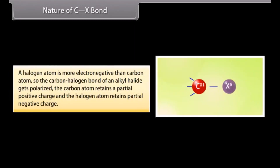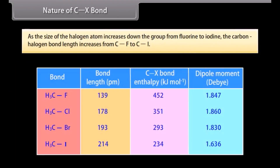Nature of the C-X bond: A halogen atom is more electronegative than a carbon atom, so the carbon-halogen bond of an alkyl halide gets polarized. The carbon atom retains a partial positive charge and the halogen atom retains a partial negative charge. As the size of the halogen atom increases down the group from fluorine to iodine, the carbon-halogen bond length increases from C-F to C-I.